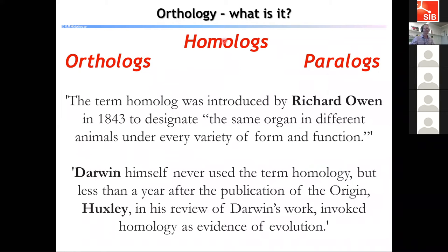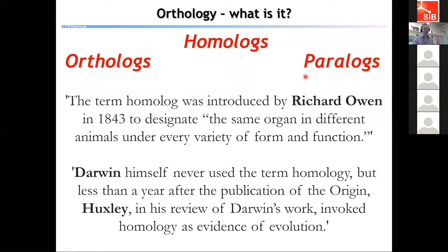We've talked about the general term of homology and the child terms of orthology and paralogy. The term 'homolog' itself was introduced by Richard Owen back in 1843 — long before sequences, long before DNA, long before evolution — to designate simply 'the same organ in different animals under a variety of form and function,' already recognizing that commonalities across species suggest they are equivalent organs in different animals. Interestingly, Darwin himself never actually used the term homology.